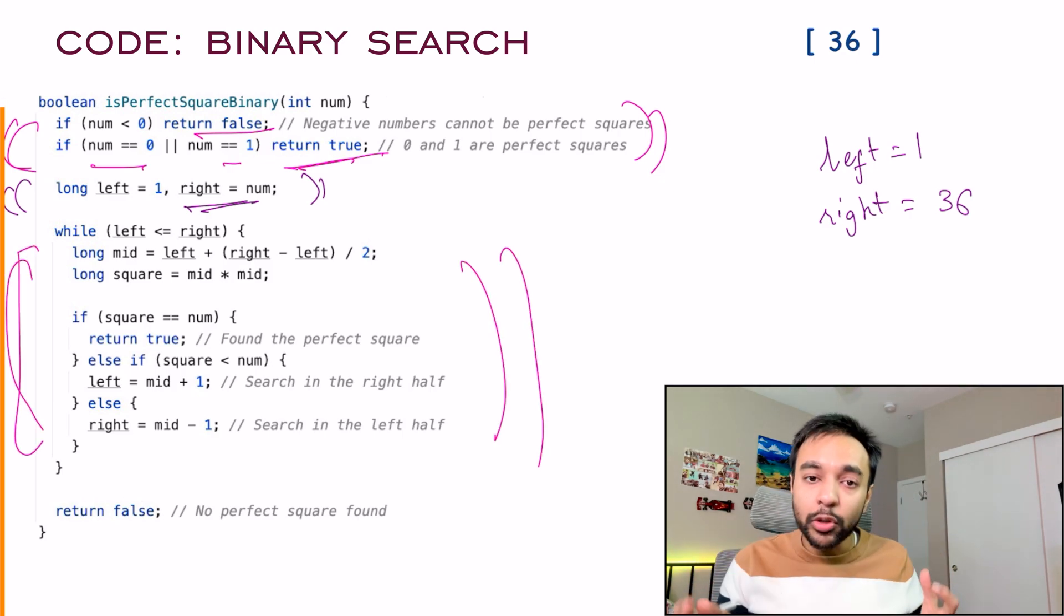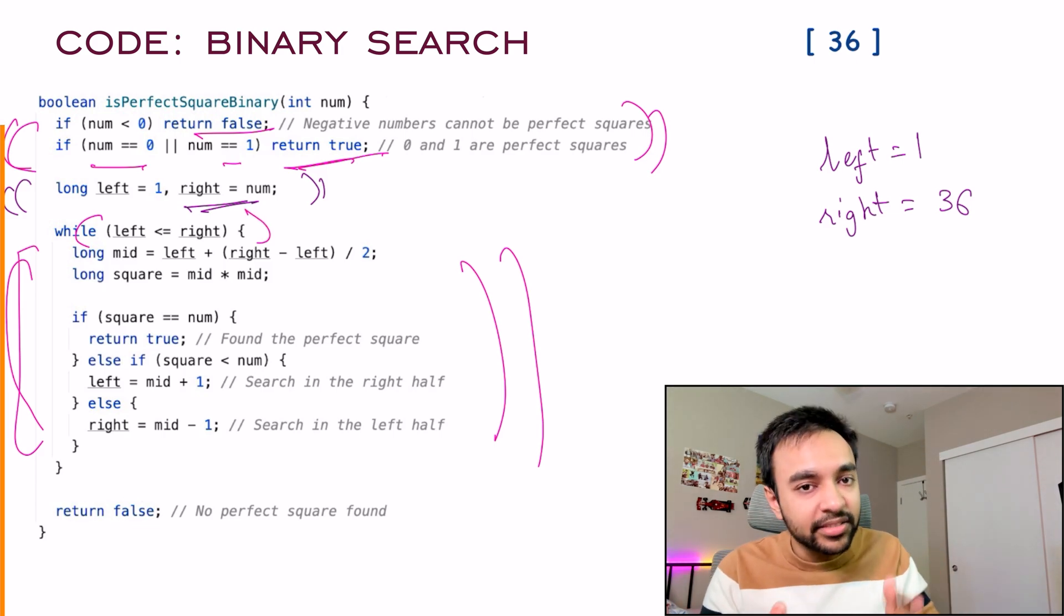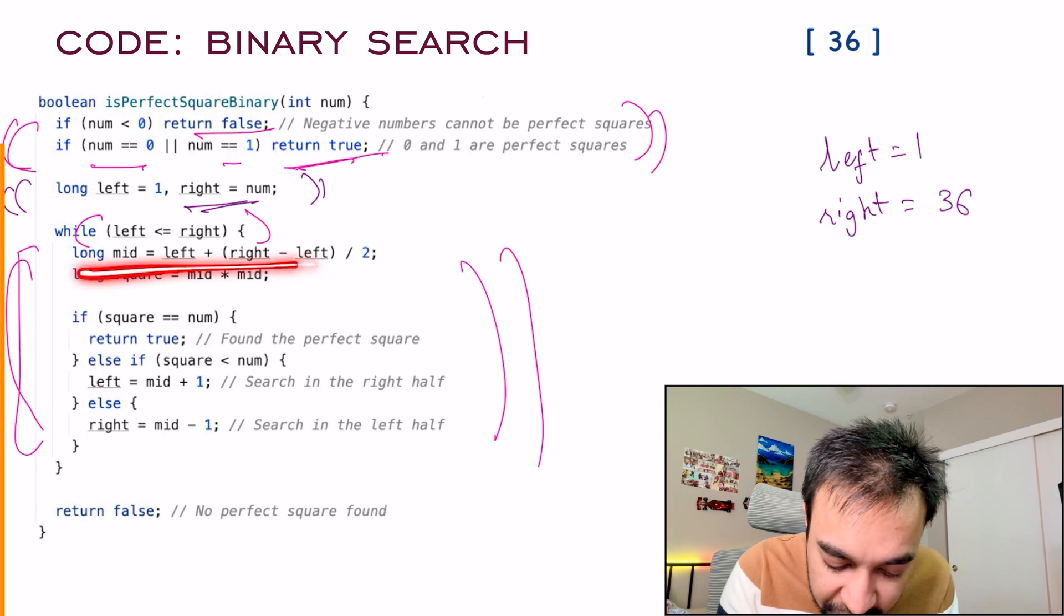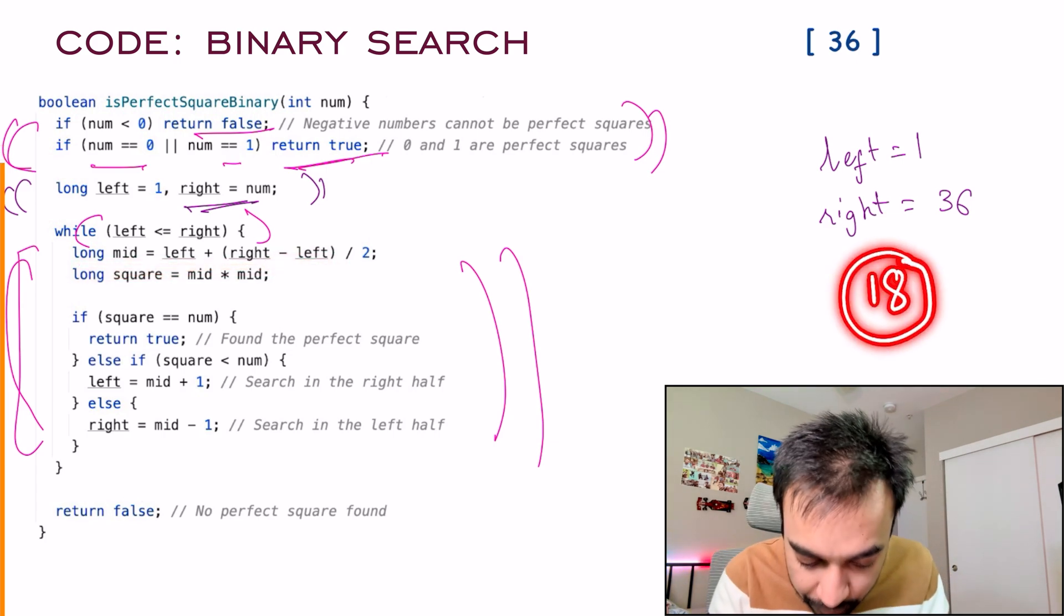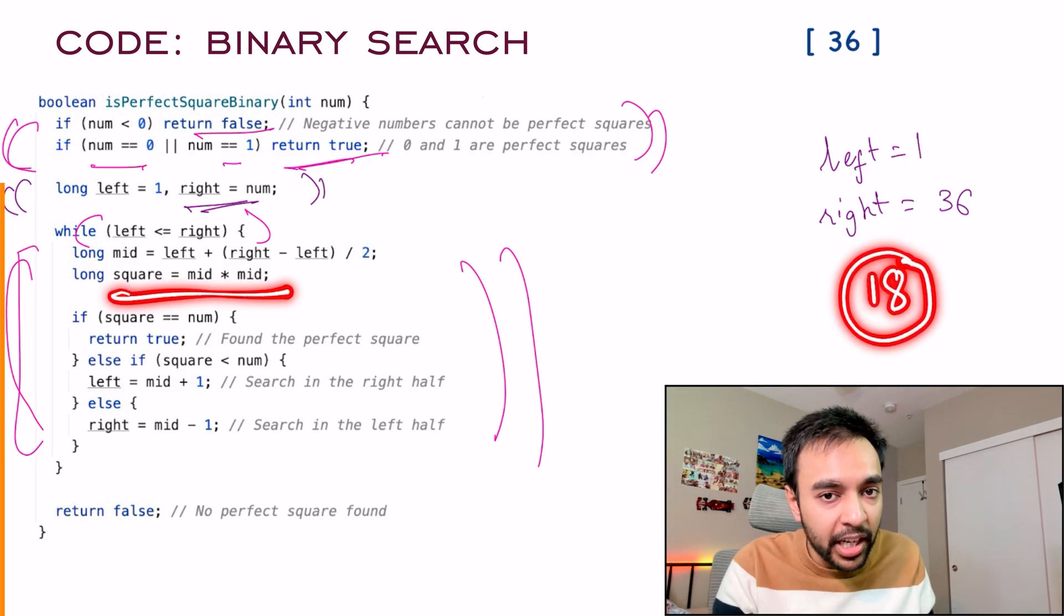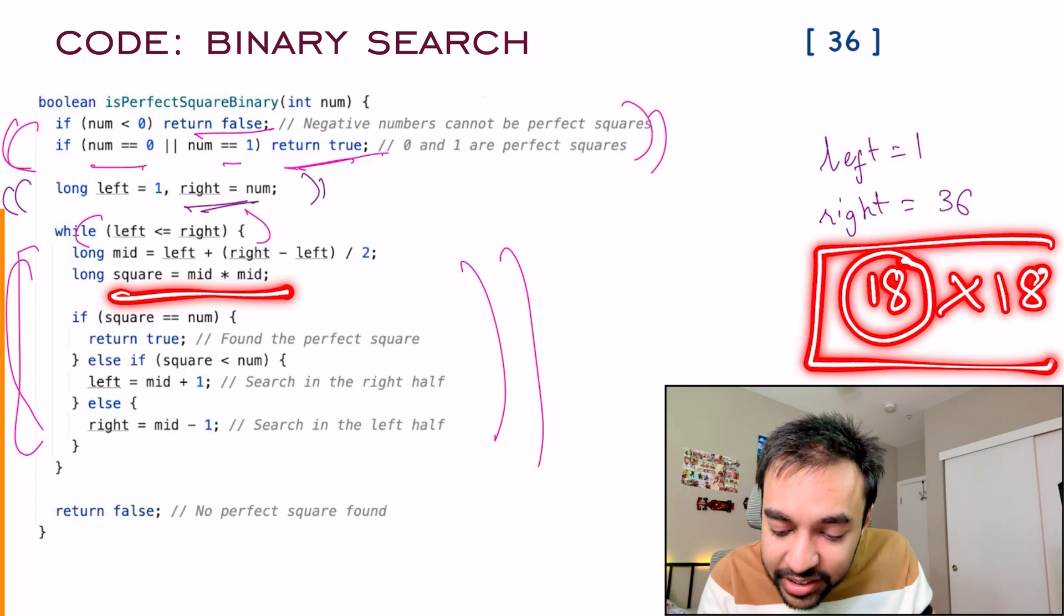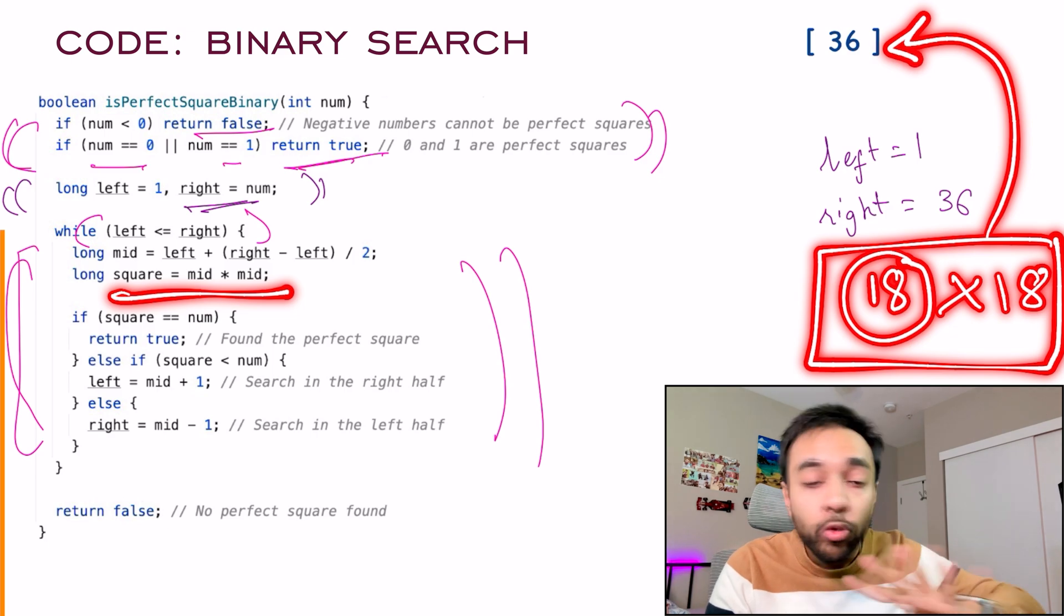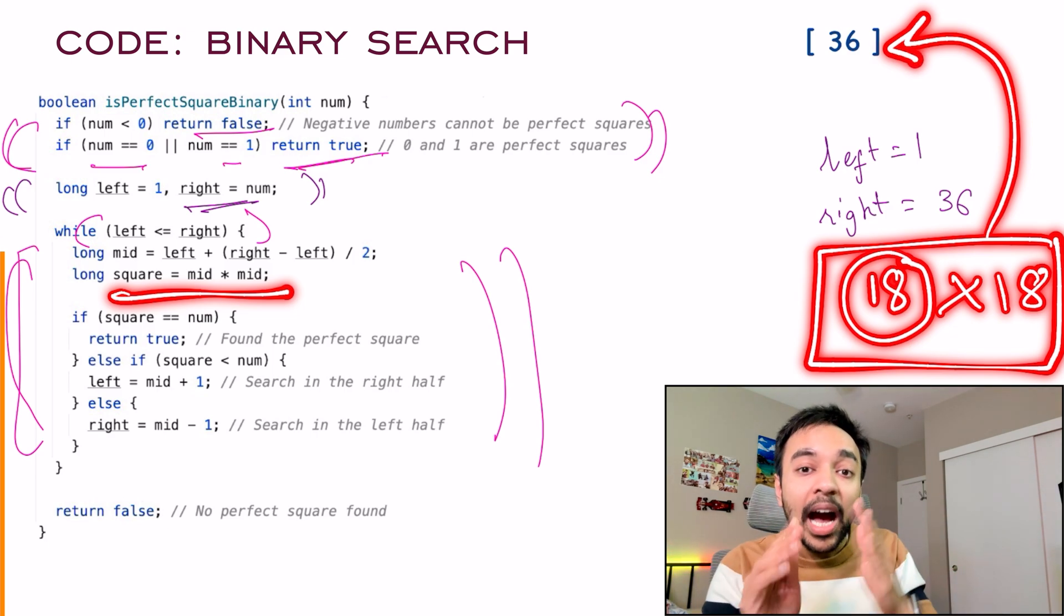You will run your binary search loop and this loop runs until left is less than equal to right. And in each iteration, what do you do? First of all, find the mid element. You got the mid as 18. Now try to square it. So you do square equals to mid into mid. You will get 18 into 18. Now check if this number equals to my actual number. No, right? So it means I need to update my high pointer. That is exactly what I do.